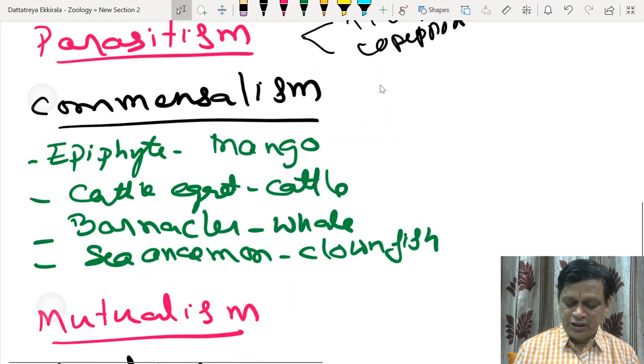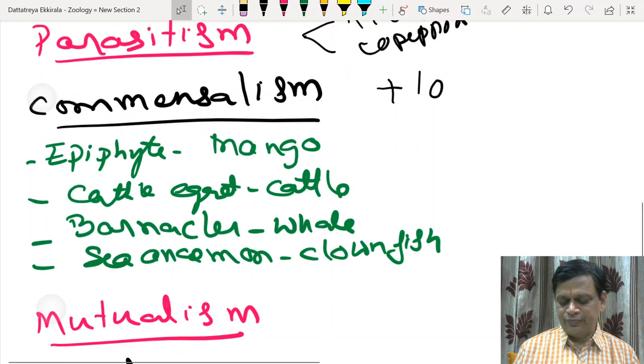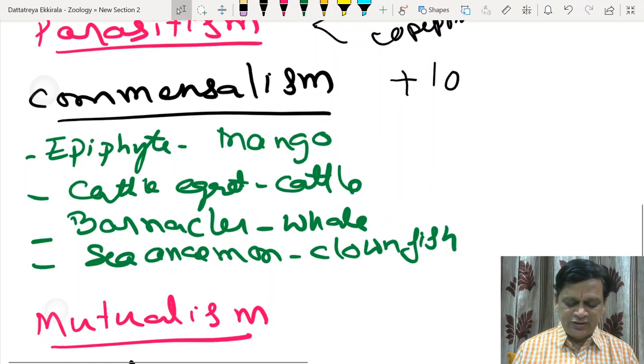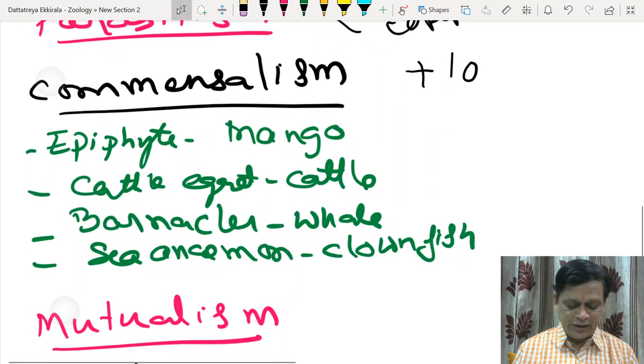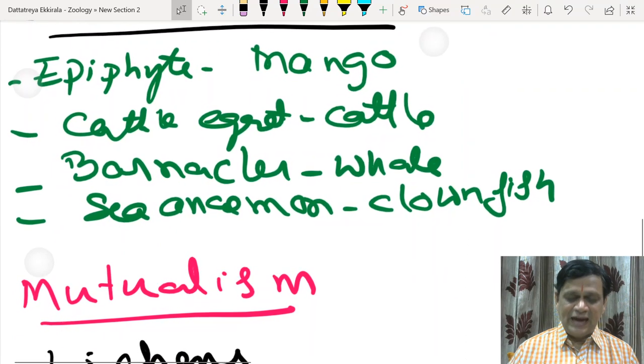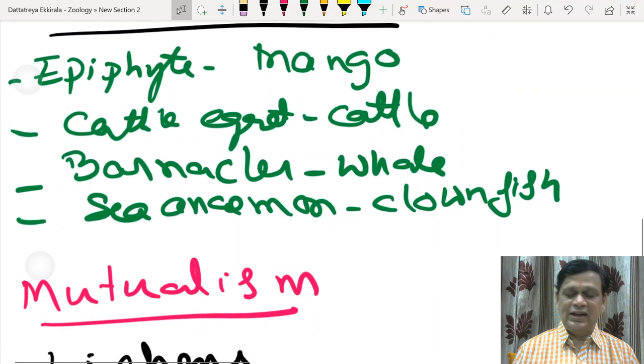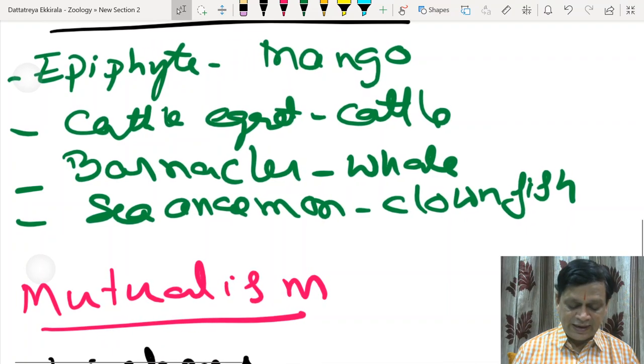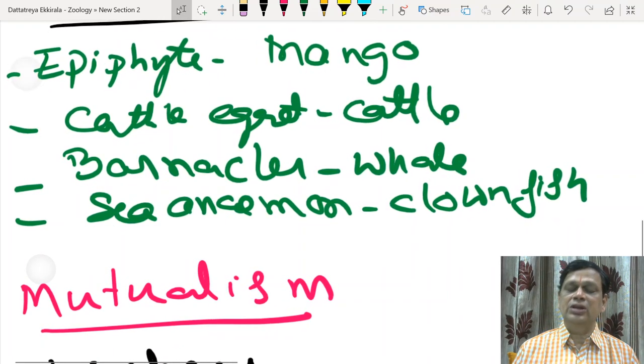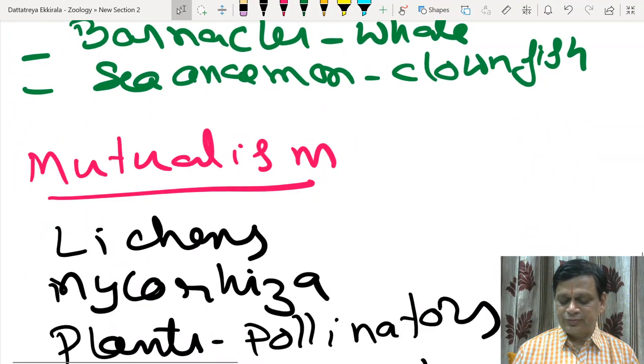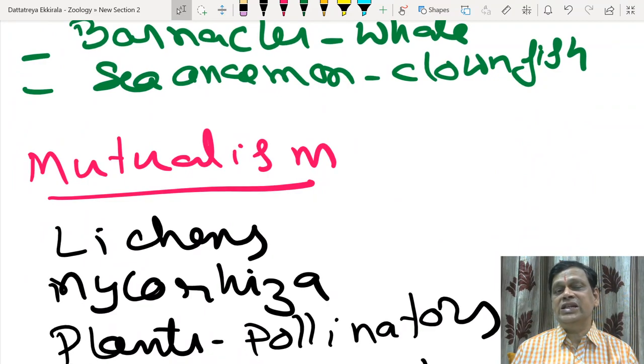Now commensalism means what? It is plus zero, beneficial to one, neutral to other. Some plants living as epiphytes on mango. Cattle egret is a bird living on the body of cattle. Cattle is not directly benefited but the bird is feeding on insects removed by the cattle. Then barnacles or crustaceans living on the body of whale that is mammal. Barnacles are getting benefited. Sea anemones and clownfish. Sea anemones with the stinging cells protect the clownfish from the enemy.